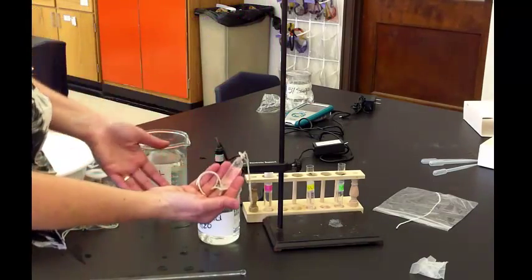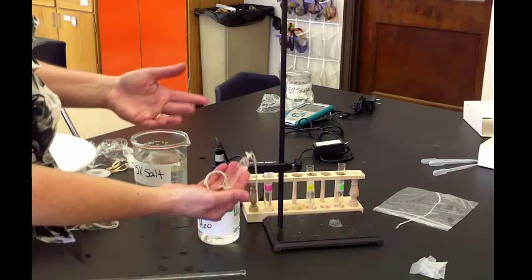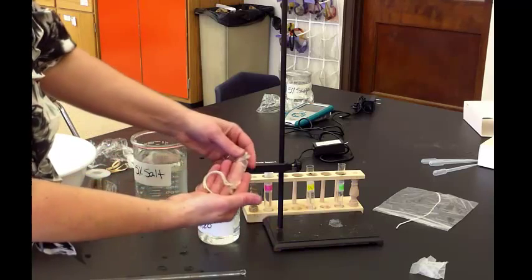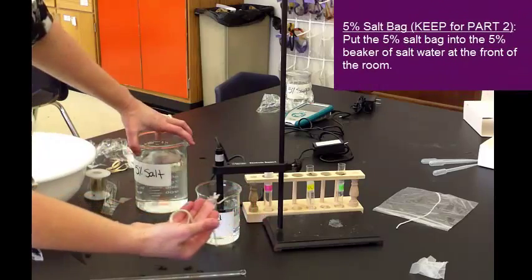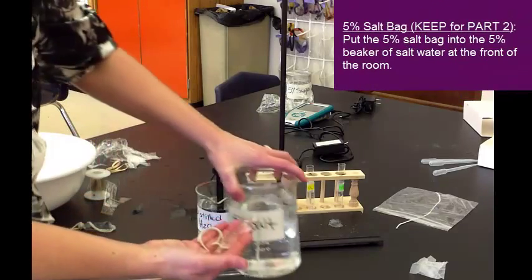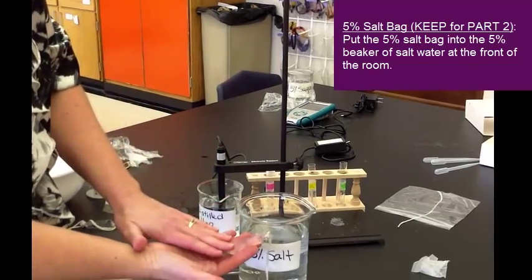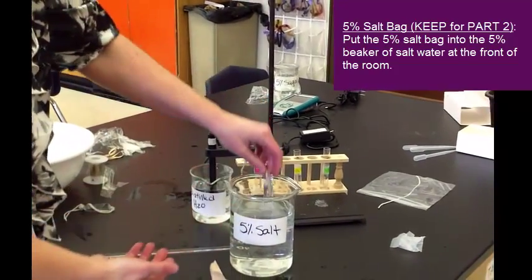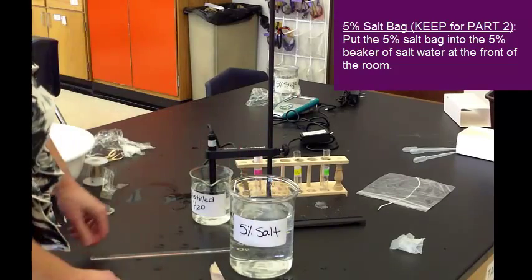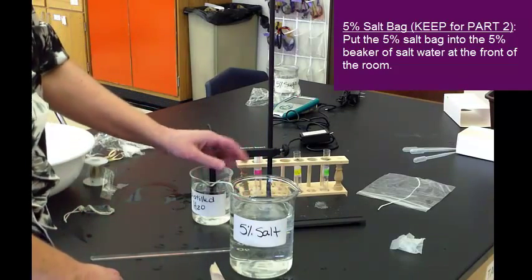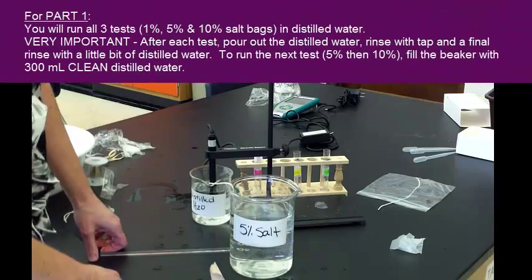Now, the 1% bag you'll throw away, unless you want to keep it. The 10% bag we don't need. The 5% bag you are going to need for part 2. So, I will have a beaker that has 5% salt, which you put in the bag. So, I'm just going to put it back and let it float, and when I'm ready for part 2, I'll come up and grab one.